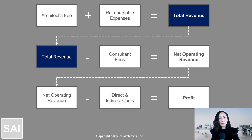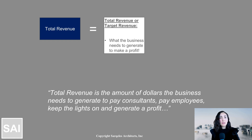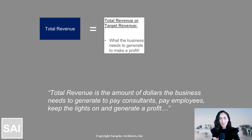Some folks like to call it target revenue. This number is really important. Your target revenue is essentially the total dollars that an architecture firm needs to generate to be able to pay their consultants, keep the lights on, pay employees, and ultimately make a profit — because without profit, we can't continue and be sustainable. So that total revenue is a very important number, but don't confuse that with profit, because that is not all going into the architect's pocket.